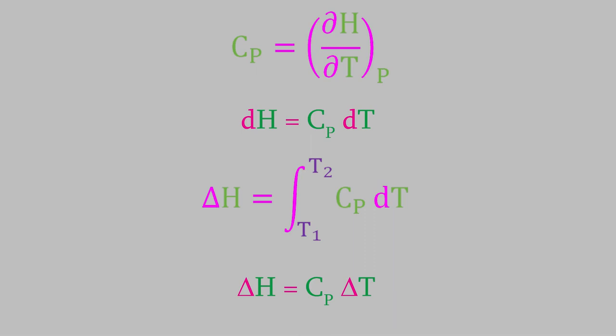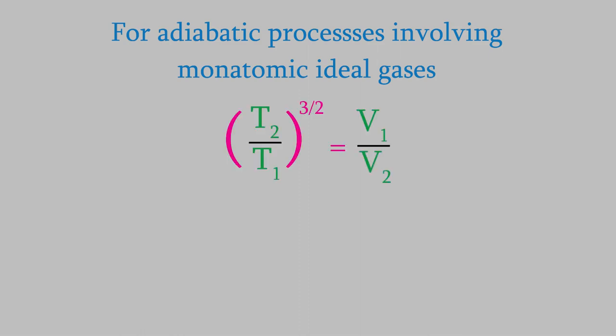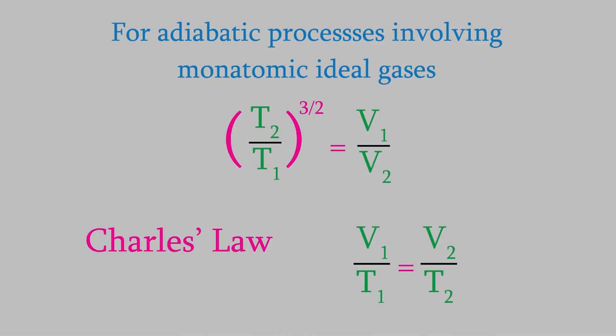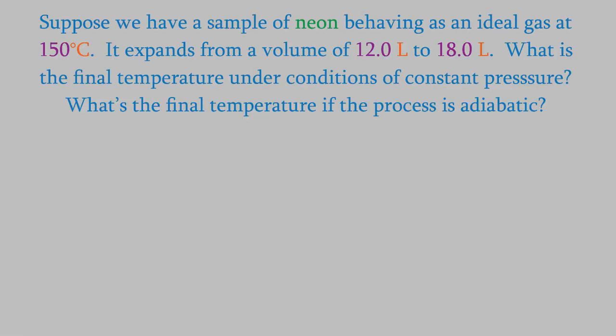Before moving on, there's one more thing to know about adiabatic processes: even though the heat is constant, the temperature does change. For a monatomic ideal gas like helium or xenon, the temperatures at the beginning and end of the process are related to the volume using a specific equation — different from Charles' law, which is valid at constant pressure. In an adiabatic process, the pressure is not constant. For example, suppose a sample of neon behaving like an ideal gas at 150°C expands from 12.0 liters to 18.0 liters. What is the final temperature at constant pressure?